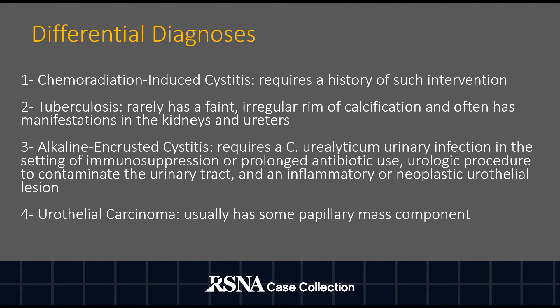Differential diagnoses: Chemoradiation-induced cystitis requires a history of such intervention. Tuberculosis rarely has a faint or regular rim of calcification and often has manifestations in the kidneys and ureters. Alkaline and encrusted cystitis requires a Corynebacterium urealyticum urinary infection in the setting of immunosuppression or prolonged antibiotic use, neurogenic bladder contaminating the urinary tract, and an inflammatory or neoplastic urothelial lesion. Urothelial carcinoma usually has some papillary mass component.